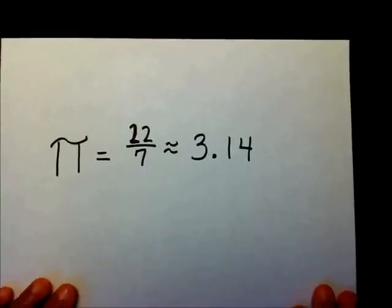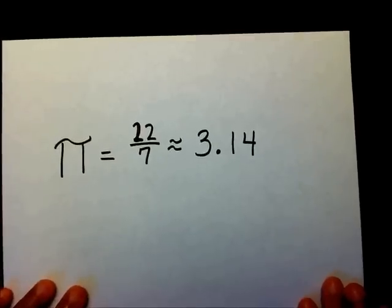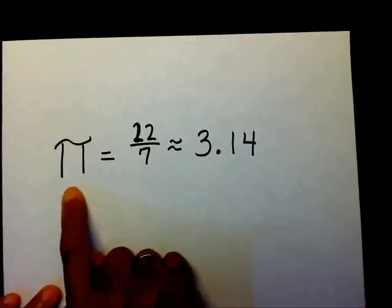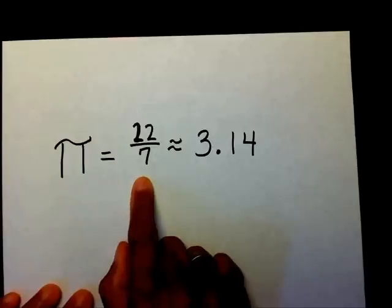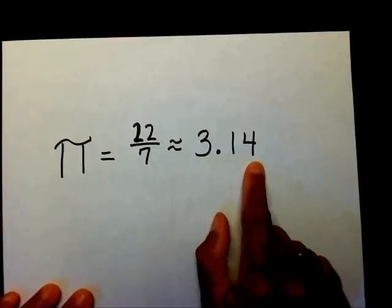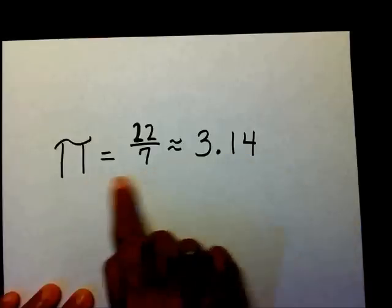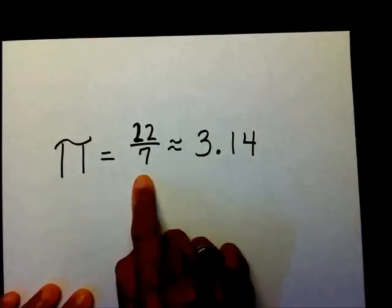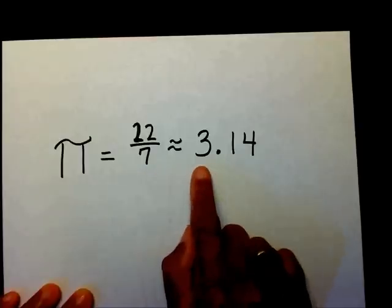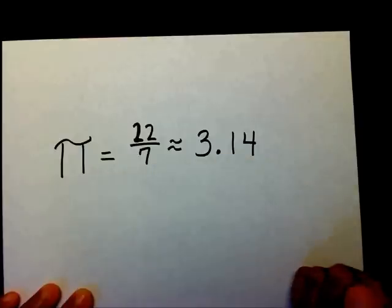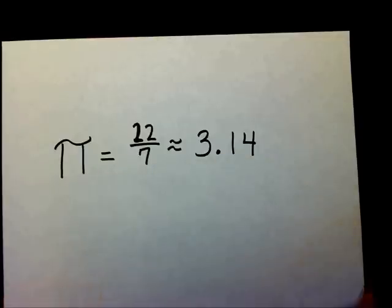Another thing we need to discuss is pi. Pi equals 22 sevenths, but 3.14 is an approximation of pi, or we can say that 3.14 is pi rounded to the hundredths place.